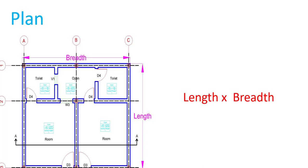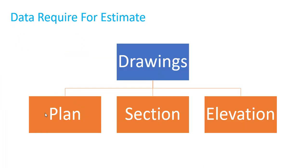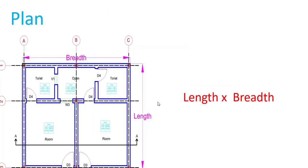Here you can see an example of a plan showing two toilets, an open area, and two rooms. If I need the length and breadth of the walls, I go directly to the plan and can get those dimensions. From the plan, we get length and breadth — that is the key takeaway.